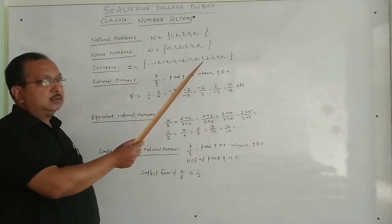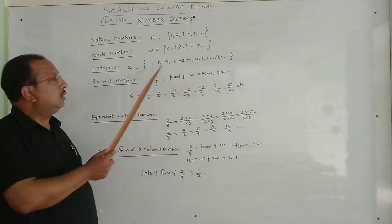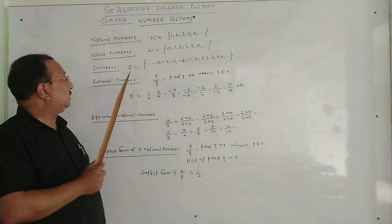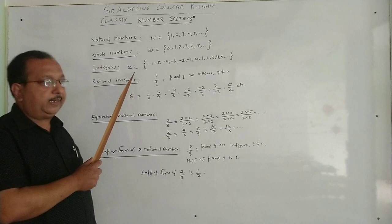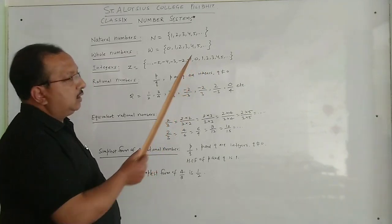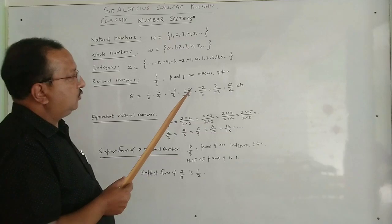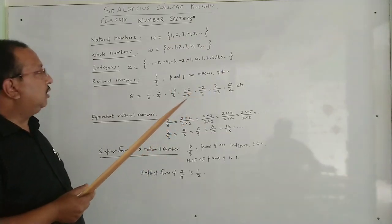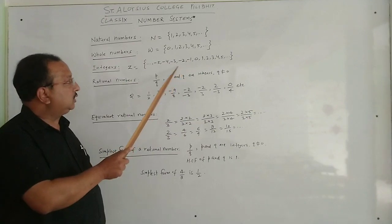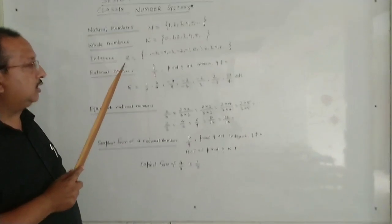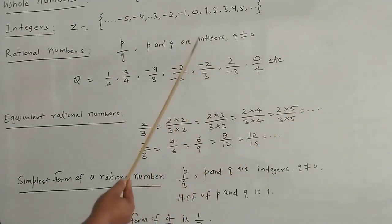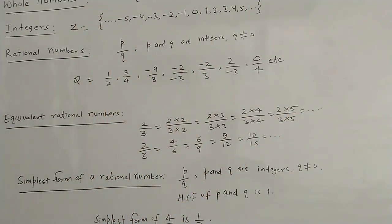Now come integers. All the natural numbers, their negatives, and 0 together make the set of integers. The set of integers is denoted by the capital letter Z. The least positive integer is 1 and there is no biggest positive integer. The greatest negative integer is minus 1 and there is no smallest negative integer. Starting from 0, towards the right are positive integers and towards the left are negative integers.